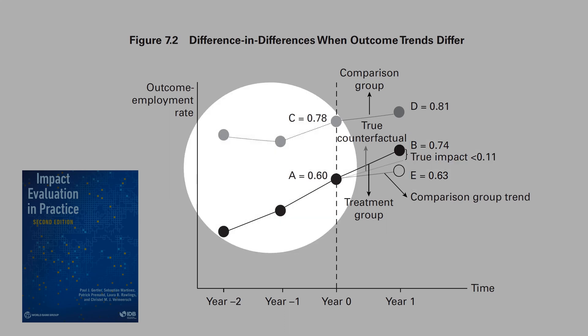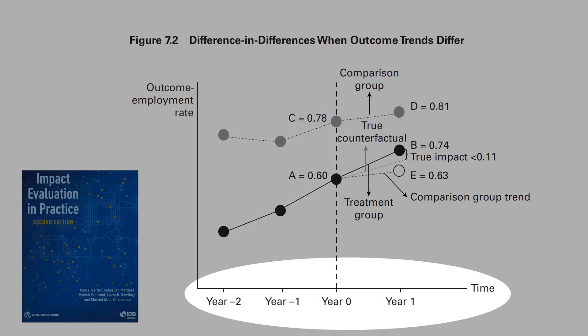How can we mitigate the problem of the violation of the common trend assumption? We can model the time trend. We can add a time trend to the diff-and-diff specification.